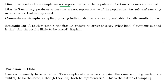Bias will happen in sampling — when bias does happen in sampling, it's going to produce values that are not representative of the population. And if we have unbiased sampling, that just means the method is not biased.